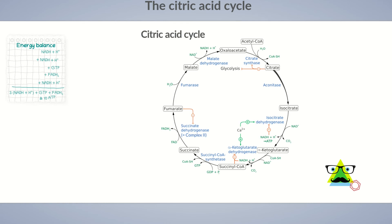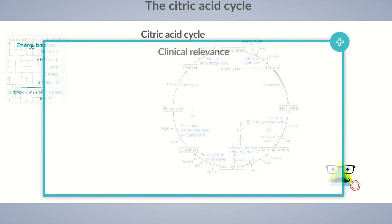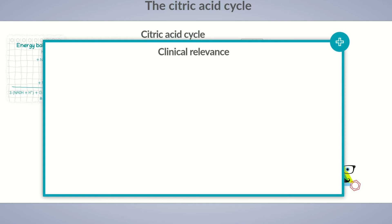As already discussed for glycolysis and beta-oxidation, pathological changes of central metabolic pathways are rare. This also applies to the citric acid cycle. Defects of the enzymes involved aren't really clinically relevant, in contrast to extreme metabolic states that affect the citric acid cycle on a regulatory level.